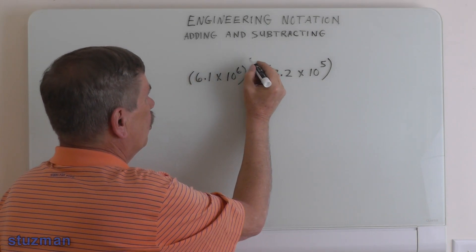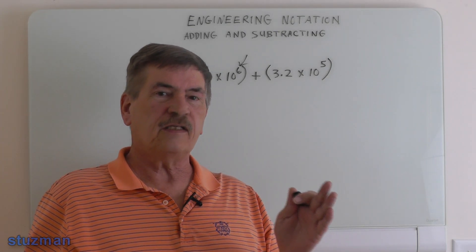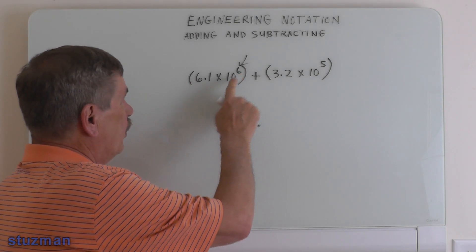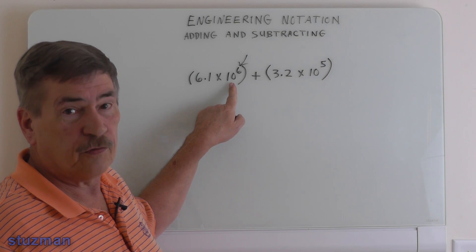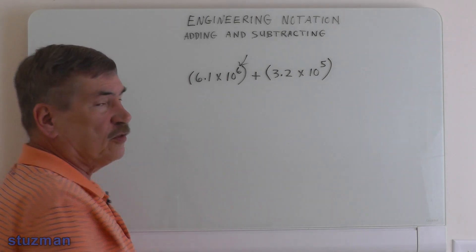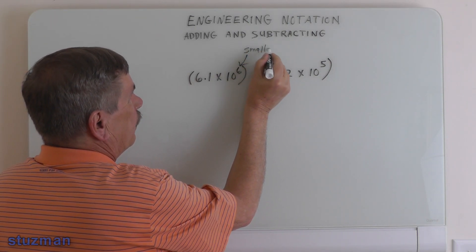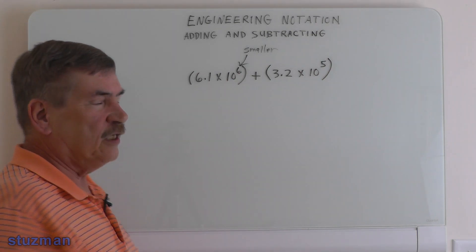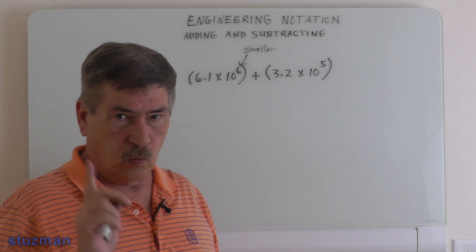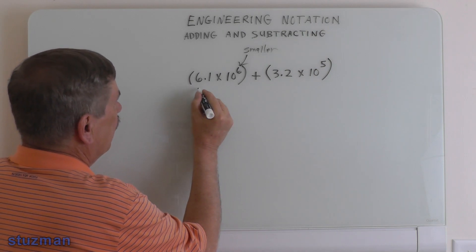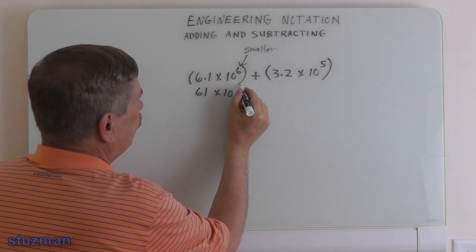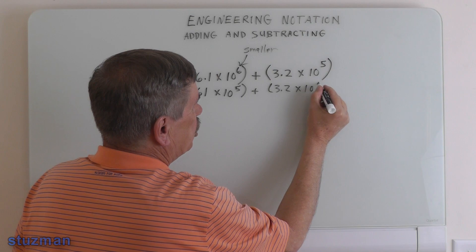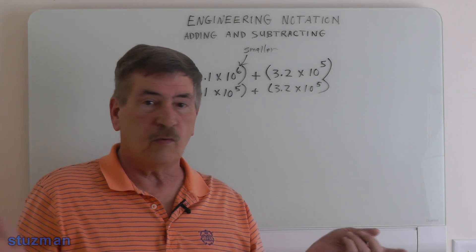Let's start with 10 to the 6th and bring it down to 10 to the 5th to match the other side. Remember, before we can add them our exponents have to be the same. We're going from 1 million down to 100,000, so this number is getting smaller. That means our mantissa has to go the opposite direction — it has to get larger. We went one place in the exponent, so we move the decimal point one place, making 6.1 become 61, now times 10 to the 5th.